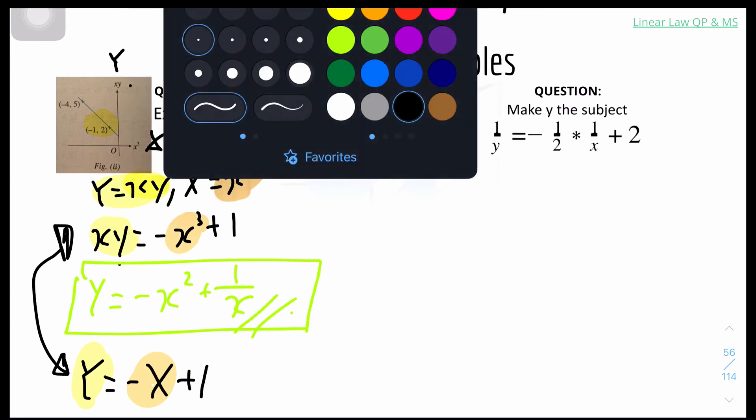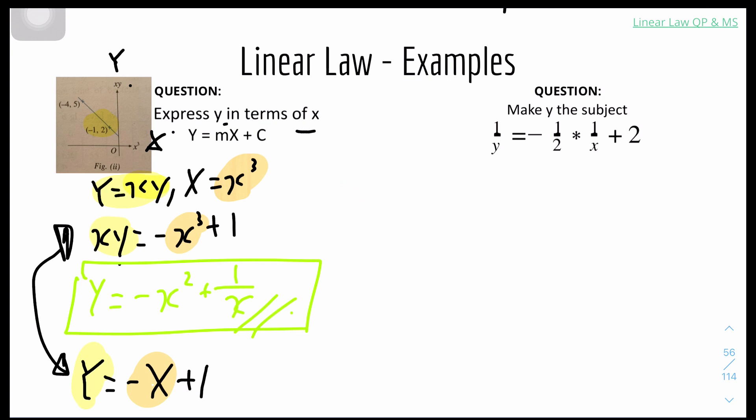Number 2, make y the subject. What you have to do is combine the right hand side part. So it will be 1 over y equals minus 1 over 2x plus 2. I would like to put the negative behind the positive, so it will be 1 over y equals 2 minus 1 over 2x. We will combine these two terms to become one term.